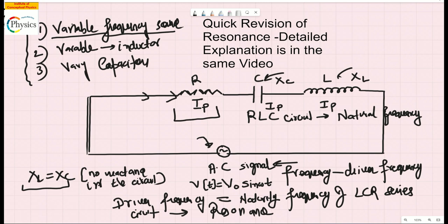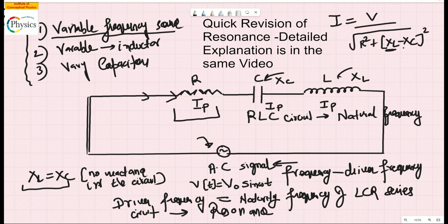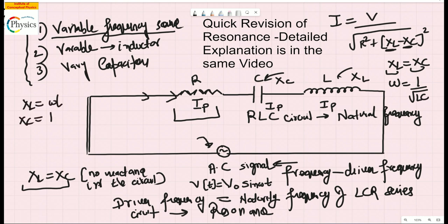The expression for current is given by V divided by the square root of R-squared plus (XL minus XC) squared. To make XL equal to XC, the natural frequency comes out to be one divided by the square root of LC, because XL equals omega-L and XC equals one divided by omega-C.